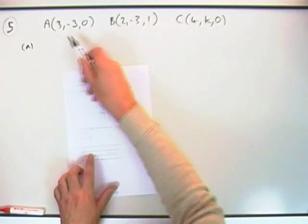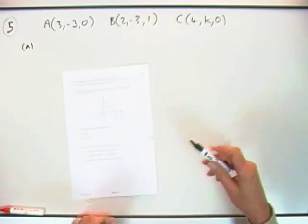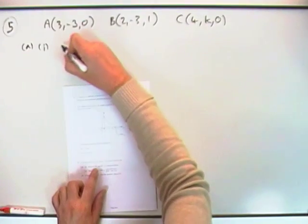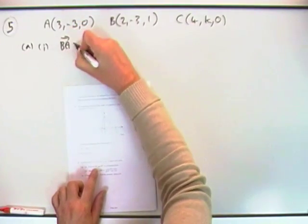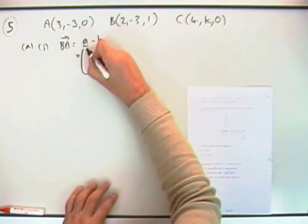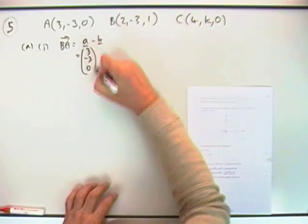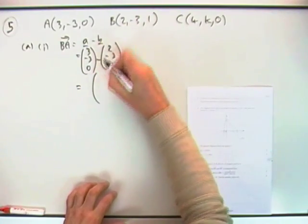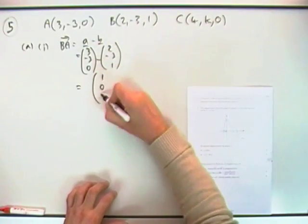Number five gives you these three points in three-dimensional space and it says find these two directed line segments. Find BA—well that's just going to be A minus B, so it's going to be (3,-3,0) take away (2,-3,1). Three take away two is one, that comes to zero, that comes to minus one. So we've got (1,0,-1) for the first one.